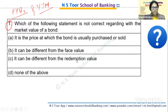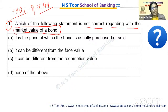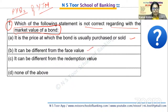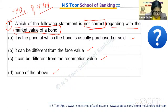Let's start with question number one: Which of the following statements is NOT correct regarding the market value of the bond? Option A: it is the price at which the bond is usually purchased or sold. Option B: it can be different from the face value. Option C: it can be different from the redemption value. Option D: none of the above. We need to identify which statement is not correct about market value of bond.